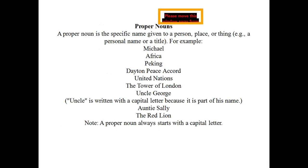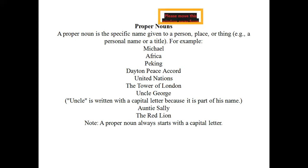A proper noun is a specific name given to a person, place or thing — any kind of title or personal name. If a specific name is given to something, that is called a proper noun. For example: Michael, Africa, United Nations, Ali, English Book, Ninth Class, Indian Army, Pakistan Army.